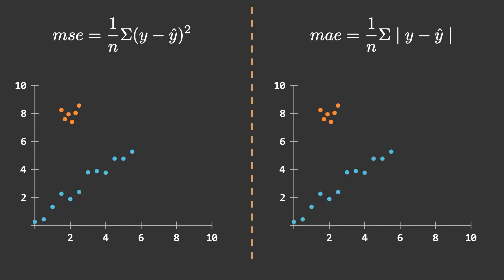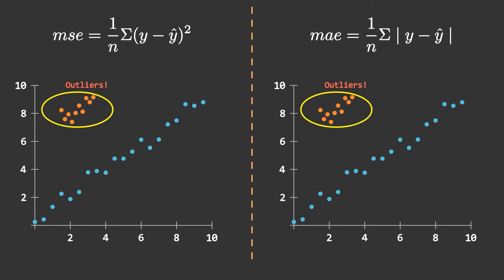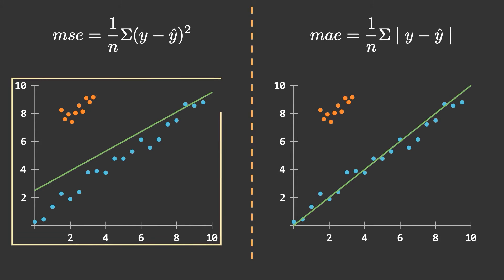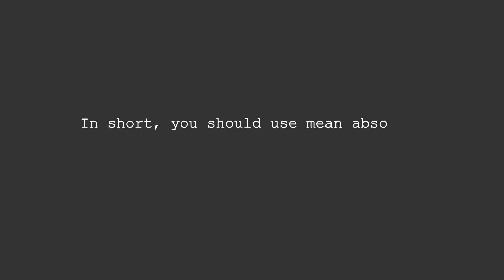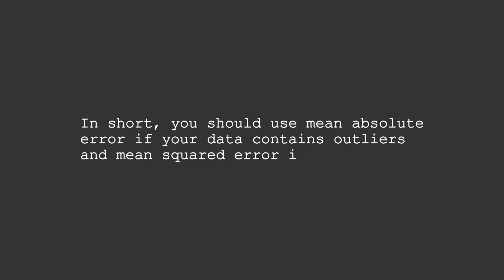Which loss function to use depends on whether your data contains outliers or not. In our case the orange points are outliers. If we make two models — one with mean squared error and one with mean absolute error — and fit them on this data, the mean squared error has completely screwed up because it is also trying to include outliers. But the mean absolute error has ignored the outliers and just fitted on the main data. In short, use mean absolute error if your data contains outliers and mean squared error if not.